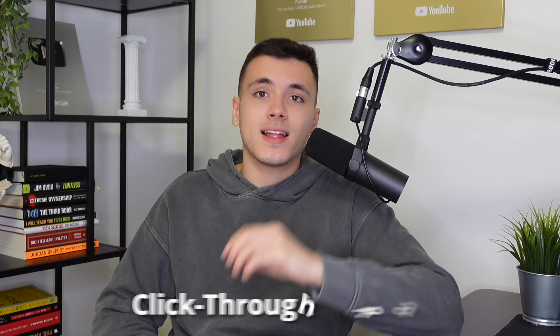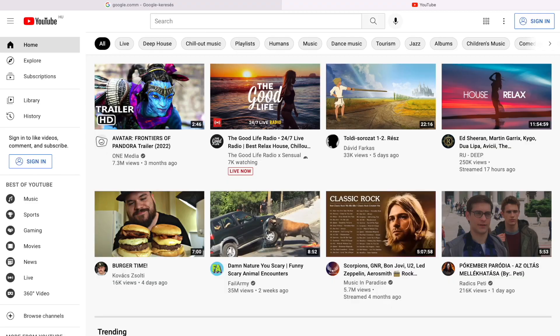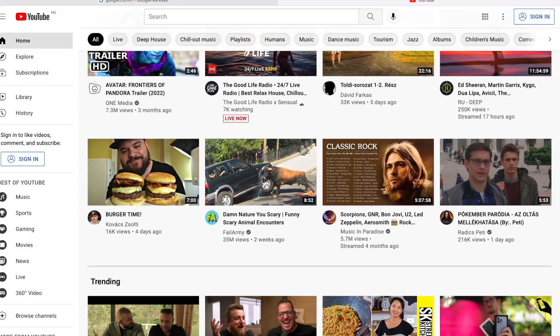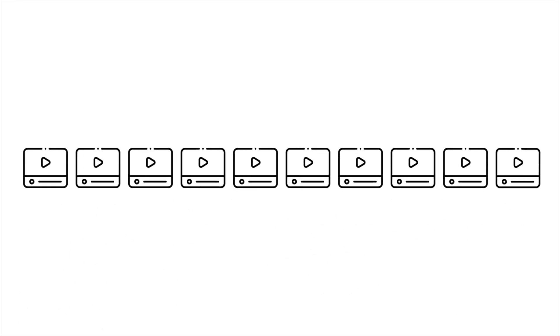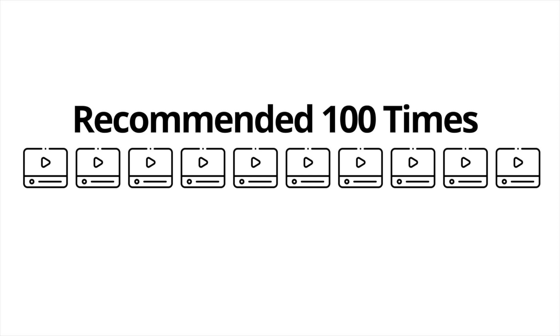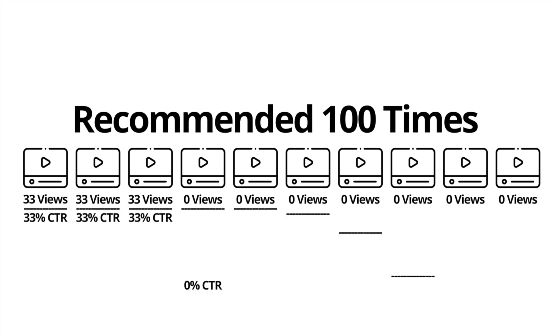Second would be CTR — click-through rate. Let me explain what it is and why it's so important. When you go to the YouTube homepage, you'll see a lot of videos recommended for you to watch, but you can only pick one at a time. Now for simplicity, let's say YouTube recommends the same 10 videos to 100 people. If out of those 10 videos, 3 videos get 33 views each while the other 7 get none, that results in those 3 videos having a 33% CTR and the other 7 a 0% CTR.